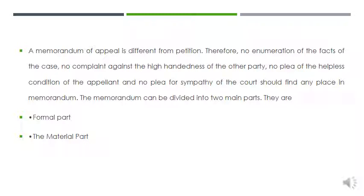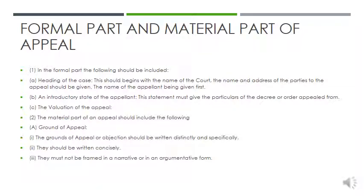A memorandum of appeal has two parts: the formal part and the material part. The formal part contains the heading of the case — that is, the court name, name and address of the parties, with the appellant's name given first followed by the respondent's name. The second element is an introductory statement of the appellant, giving the particulars of the decree or order appealed from. Unlike a petition, you do not enumerate facts here. The formal part also includes the valuation of the appeal.